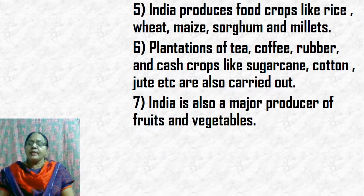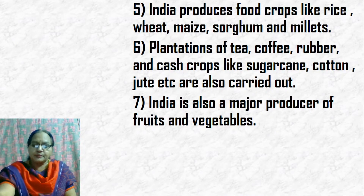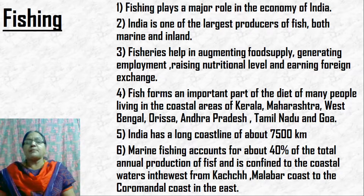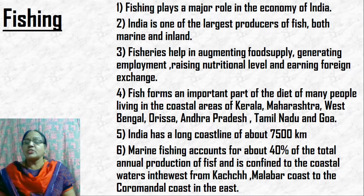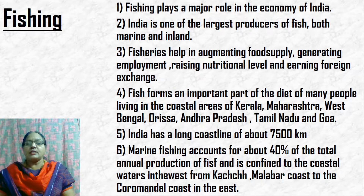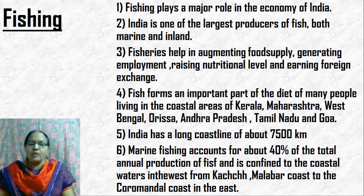India also produces fruits and vegetables. Now, fishing is another major primary activity. India is one of the largest producers of fish — both marine as well as inland. Marine fishing is carried out along the coastal regions, and inland fishing is along the rivers and their tributaries.